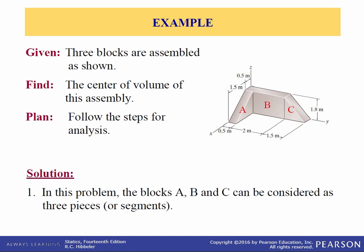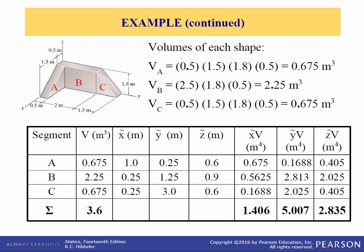Let's do some examples to make this crystal clear. We have three blocks assembled as shown, and we want to find the center of volume of this assembly. In this piece we have three blocks: A and C are triangles, and B is a rectangle. First, we get the volumes. Here's the table: the first column is the segment number, and the next column is the volume, mass, weight, or length depending upon the problem — because you can find the centroid of a piece of wire bent into a shape, a simple area, volume, mass, or weight.